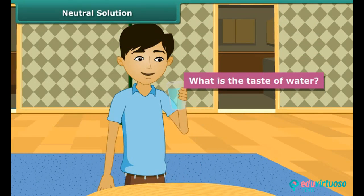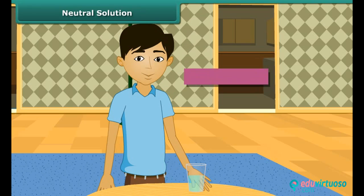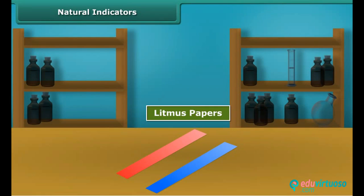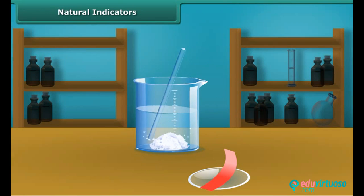What is the taste of water — is it sour or bitter? It is neither, as water is neither an acid nor a base. The substances that are neither acid nor base are called neutral solutions. Litmus is a natural indicator extracted from lichens. It has a purple color in distilled water and is available in the form of a solution or litmus papers.